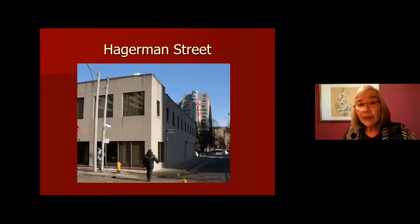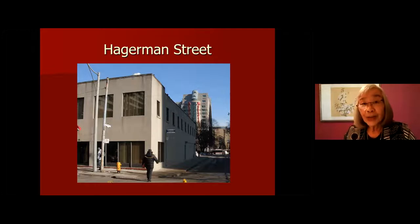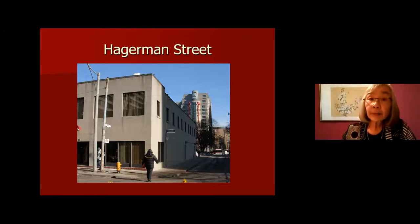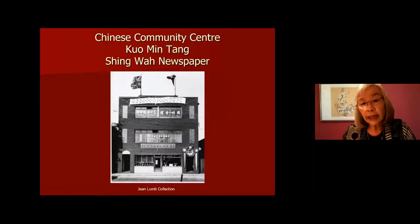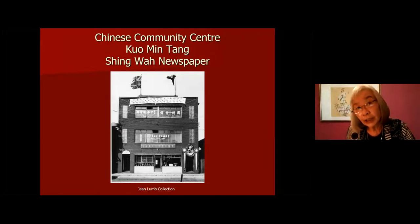We're now at the bottom of Elizabeth Street, on Hagerman Street — a very short street. You can see the Church of the Holy Trinity, and behind that the Marriott Hotel where the Eaton Centre complex is. This one little short street was the political heart of our original Chinatown, because of a particular three-story building: the second floor held the Kuomintang Party, the first floor the Xinhua Newspaper — the political newspaper of the Kuomintang — and the top floor was the Chinese Community Centre.